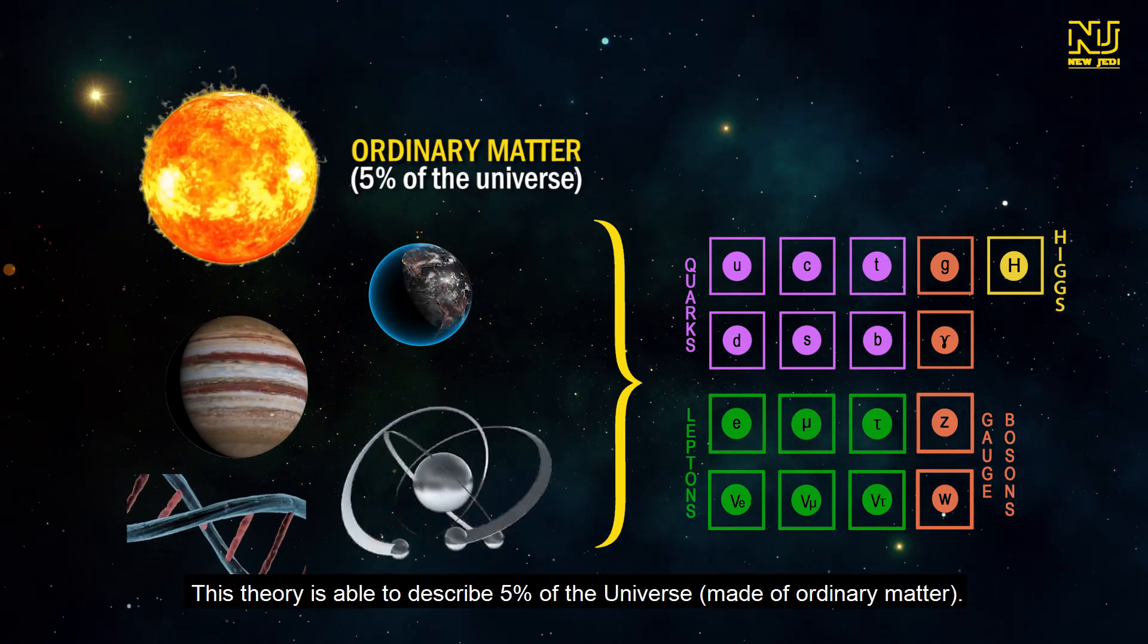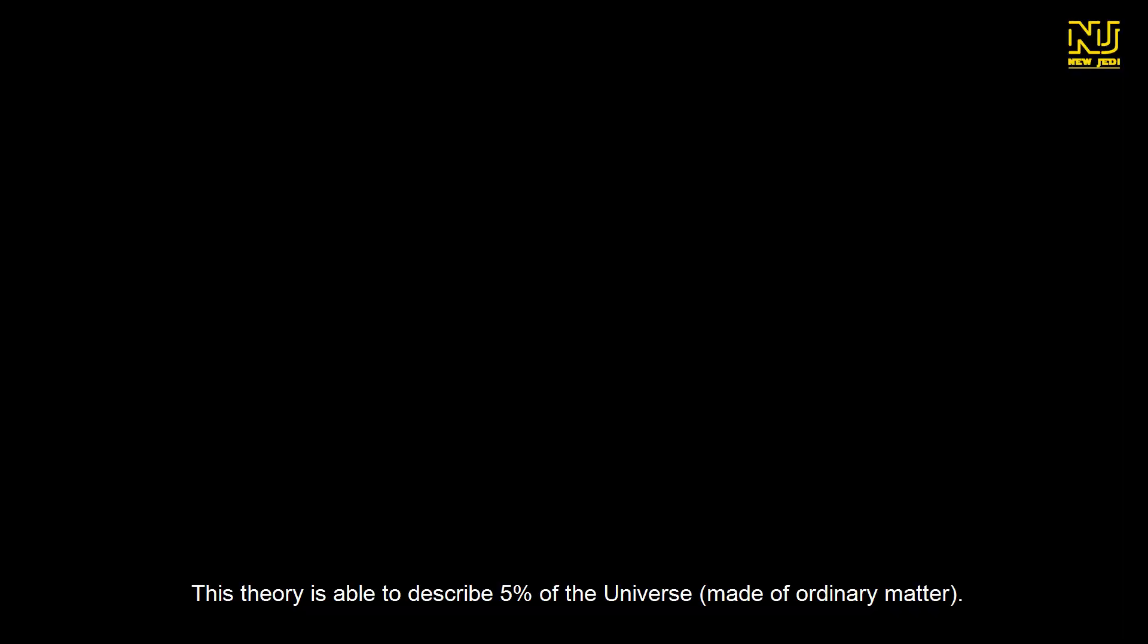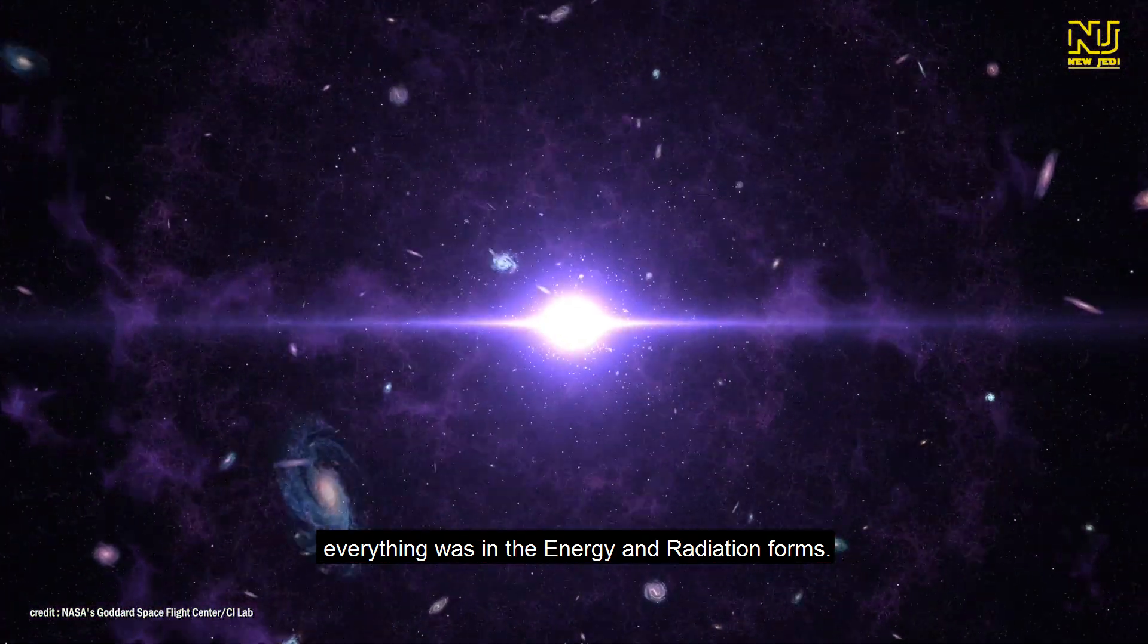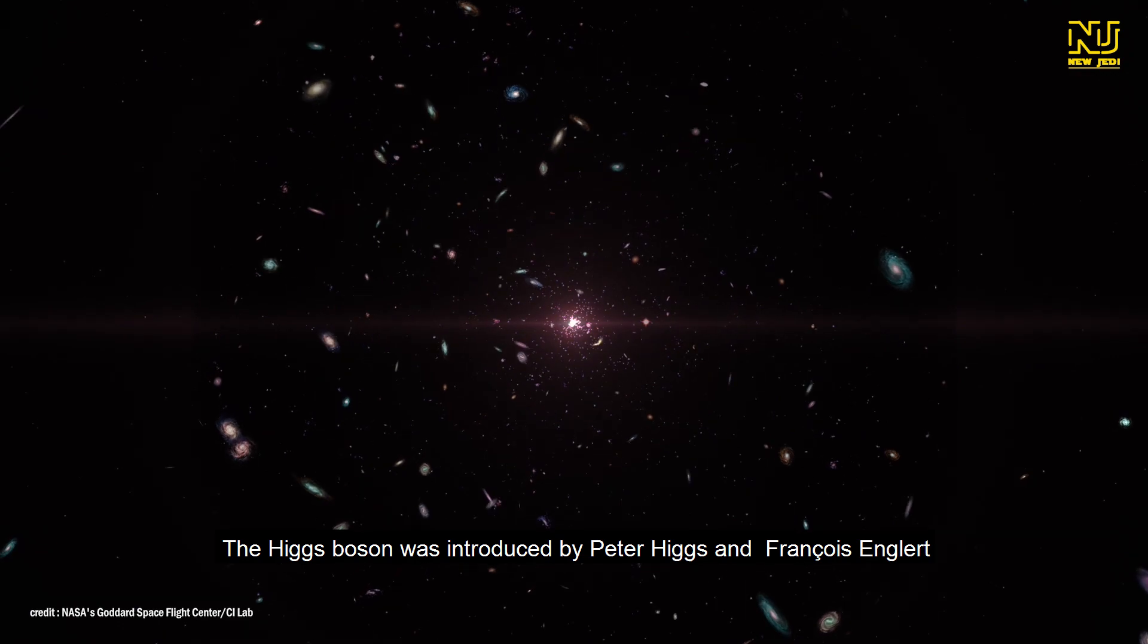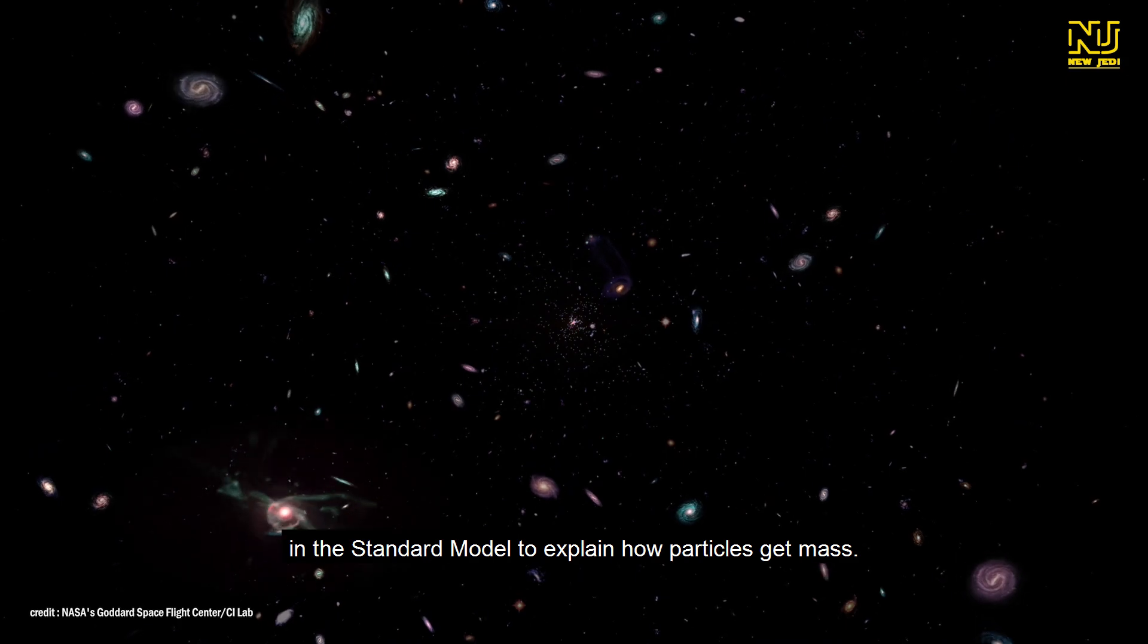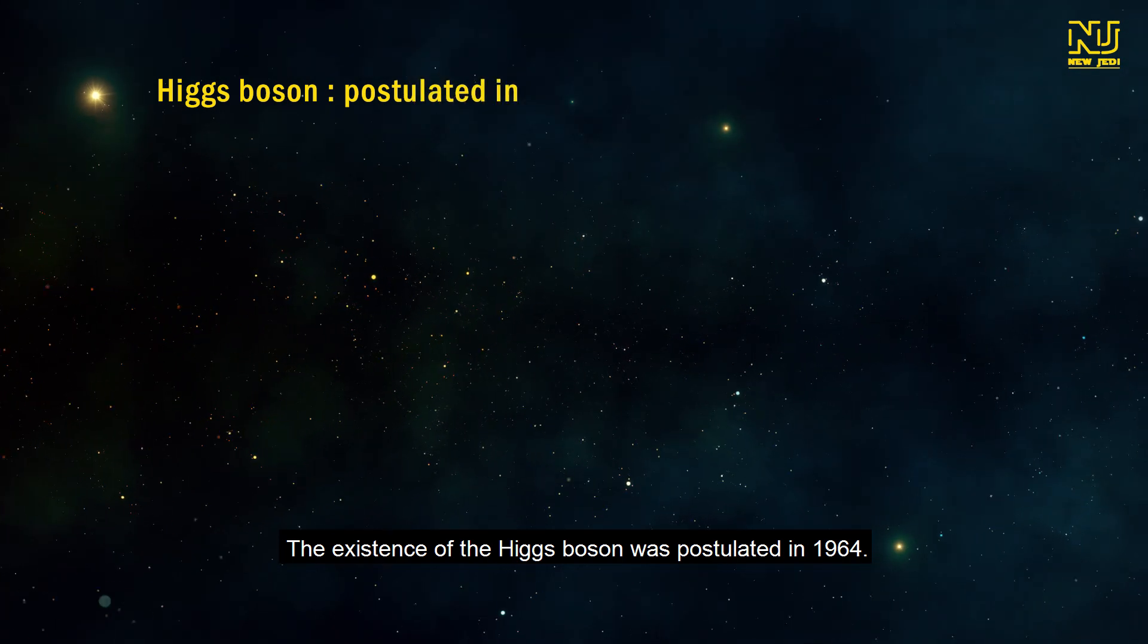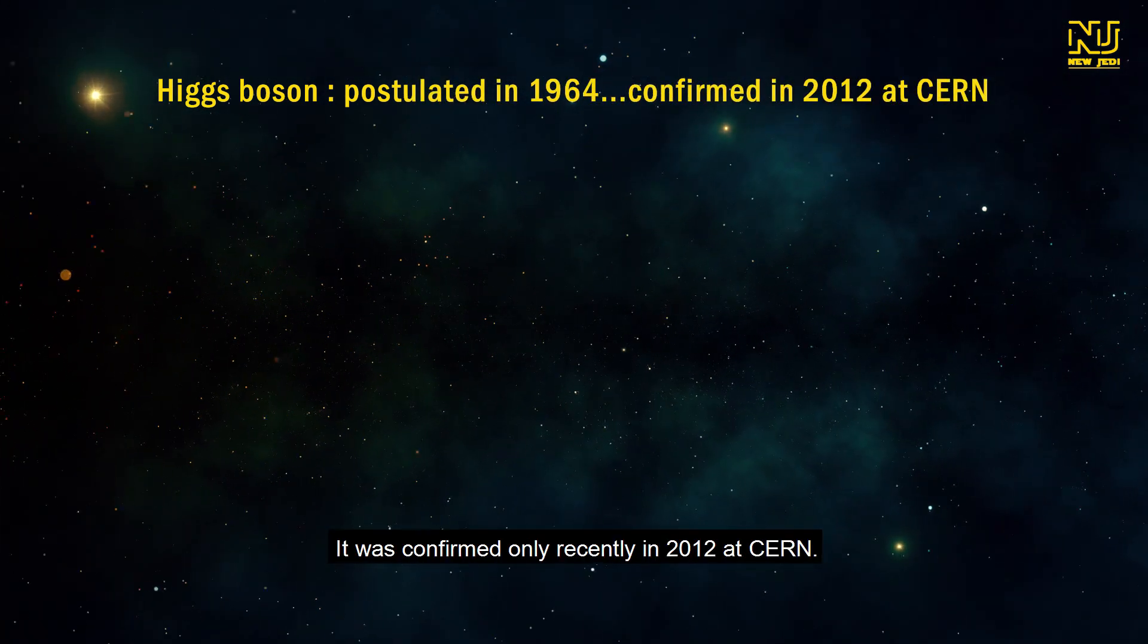This theory is able to describe 5% of the universe made of ordinary matter. Indeed, at the beginning of the universe, everything was in the energy and radiation forms. There was no matter. The Higgs boson was introduced by Peter Higgs and François Englert to explain how particles get mass. The existence of the Higgs boson was postulated in 1964. It was confirmed only recently, in 2012.